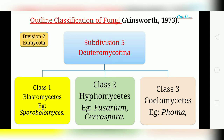The first class is Blastomycetes. It includes yeast-like fungi, with or without pseudomycelium. They reproduce asexually by budding or fission methods. Examples include Sporobolomyces and Torulopsis.